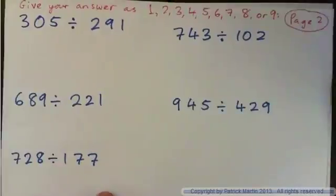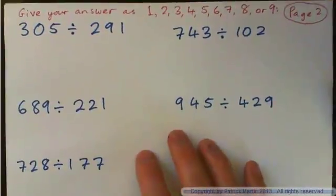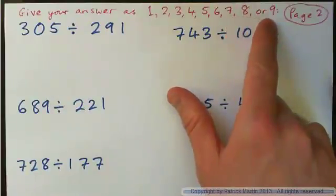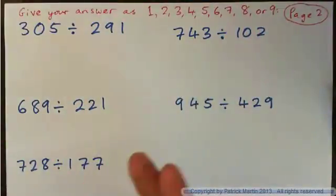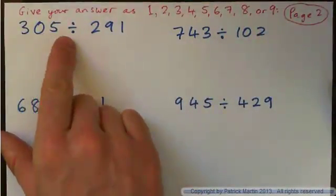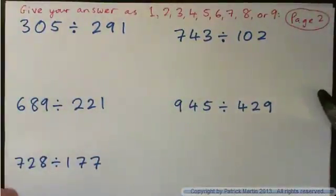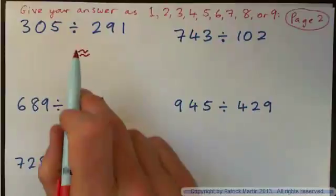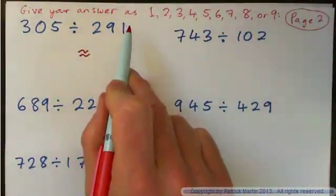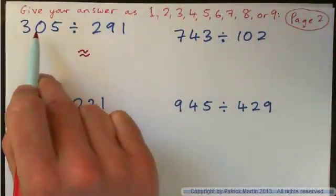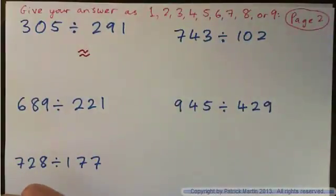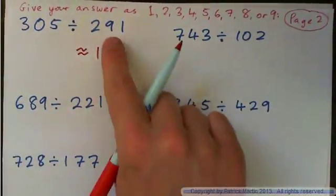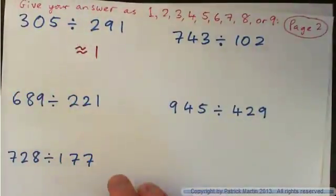Okay, let's have a look at page two. You've got to give your answer as a digit between one and nine. So what's 305 divided by 21, just as a digit between one and nine? And how many 291s are contained in 305? Well, approximately one — you don't have two 291s in 305.